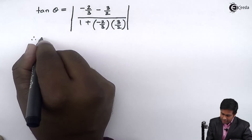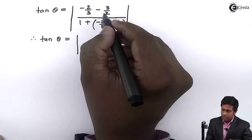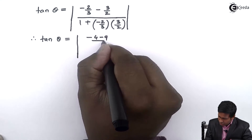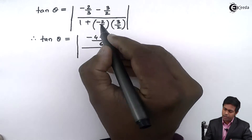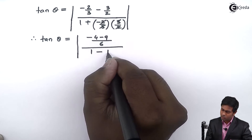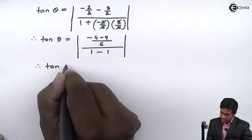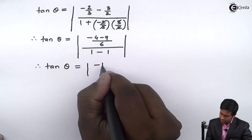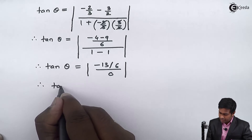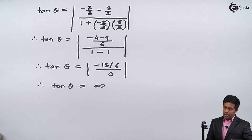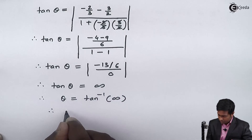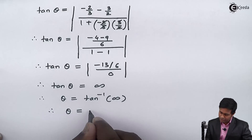By solving this, taking the LCM, we get minus 4 minus 9 upon 6 in the numerator. In the denominator, we can cancel, getting minus 1, so that becomes 1 minus 1, which equals 0. So in the denominator we get 0, and in the numerator we get minus 13 upon 6. Whenever we get 0 in the denominator, the value becomes infinity. Therefore theta equals tan inverse of infinity, which is pi by 2 or 90 degrees.